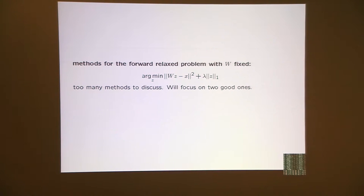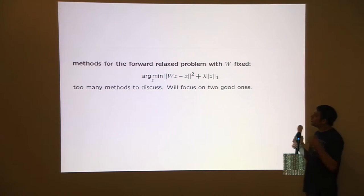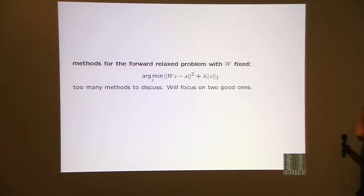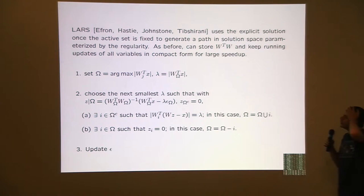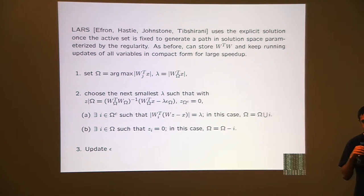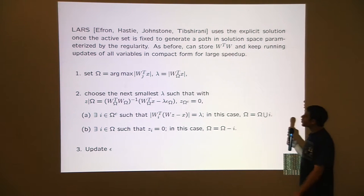For the L1 (relaxed) problem, there's been a huge amount of work — it is not an exaggeration to say there are a thousand papers on how to do the L1 problem. I'm going to talk about two that I think are good. LARS is a homotopy method that makes use of the fact that once you know the active set for the L1 problem, you can explicitly write out the solution. The LARS algorithm starts by picking the active set as the guy with the largest inner product with x, and starting lambda at the value that zeroes everything out — for a big enough lambda, all z entries are zero.